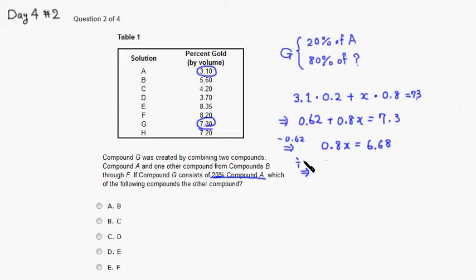Alright, so we just have to divide through by 0.8. x equals 6.68 divided by 0.8. We can move the decimal point one notch for both, so it's going to be 66.8 divided by 8.